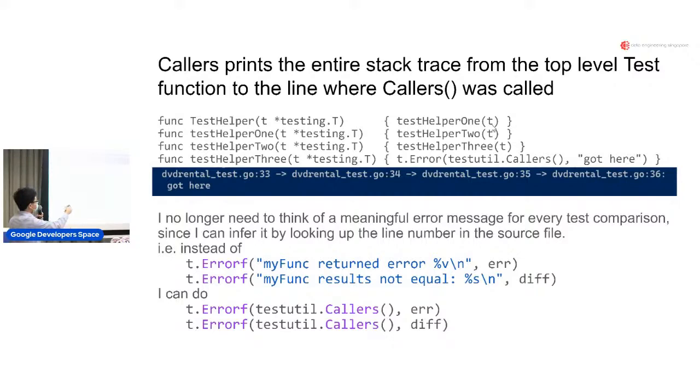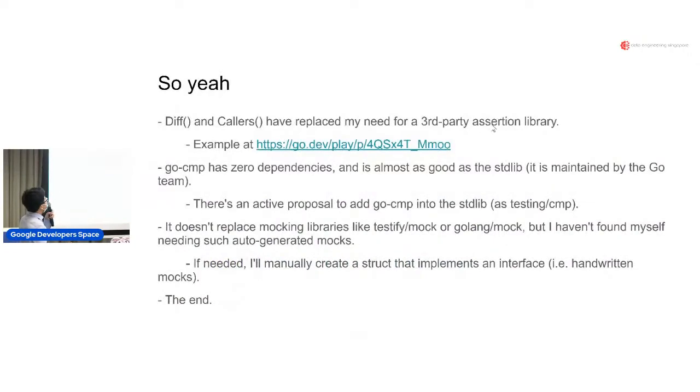It allows me to no longer think of a meaningful error message for every single test comparison I write because I write a lot of test comparisons. I can just infer it by looking at where the line occurred in the source file. So instead of - if there's an error, I don't say 'oh, this function returned an error' followed by the error itself, or 'the results are not the same' and then followed by the diff. I just directly call testutil.Callers error, testutil.Callers diff, and then I can just look at where in the source file it is and I get all the context that I need.